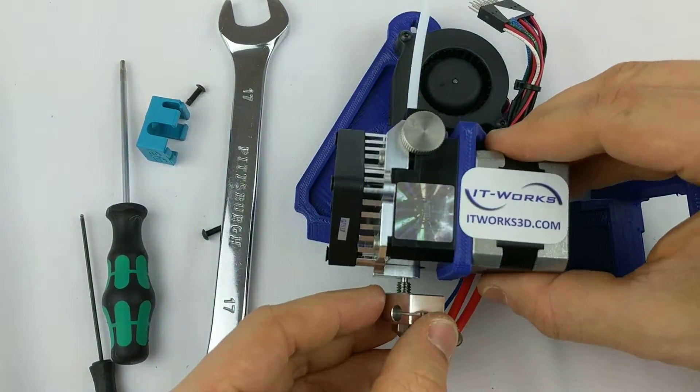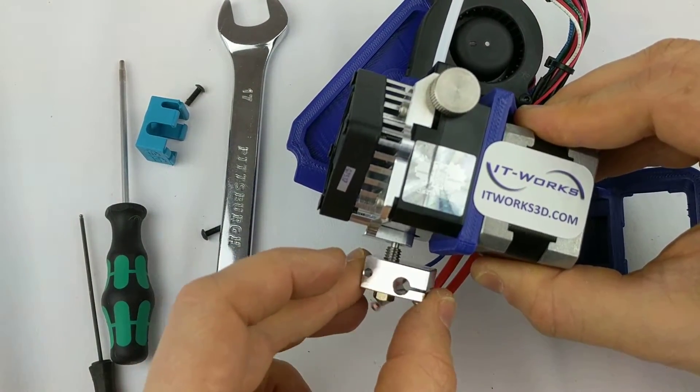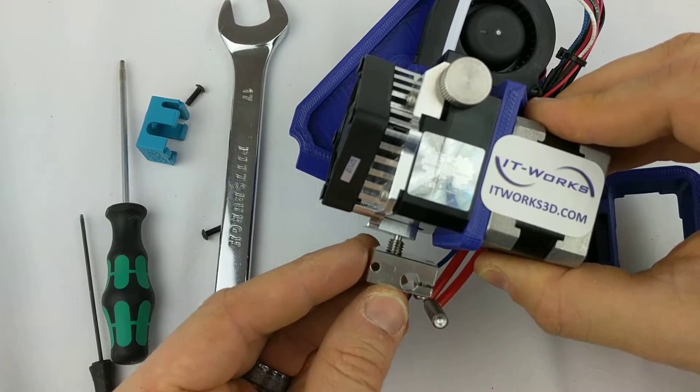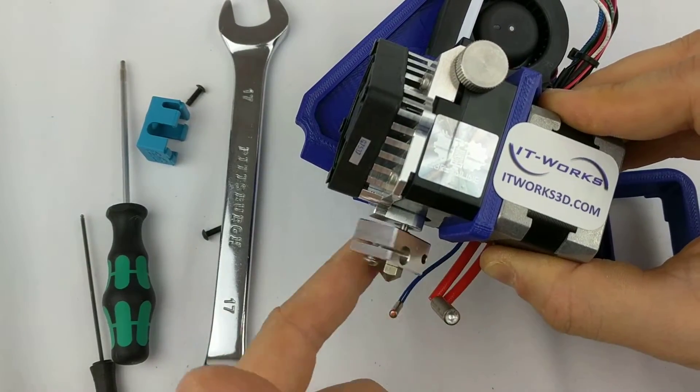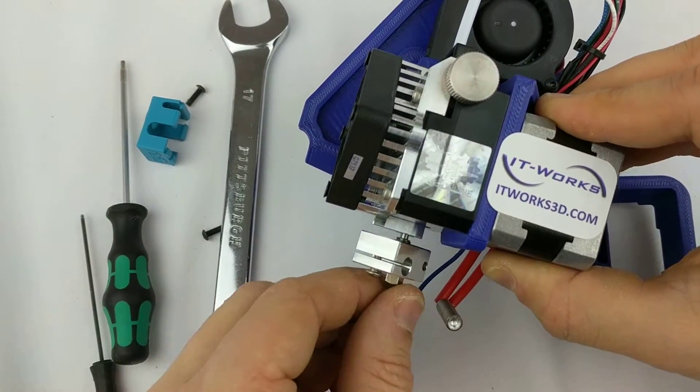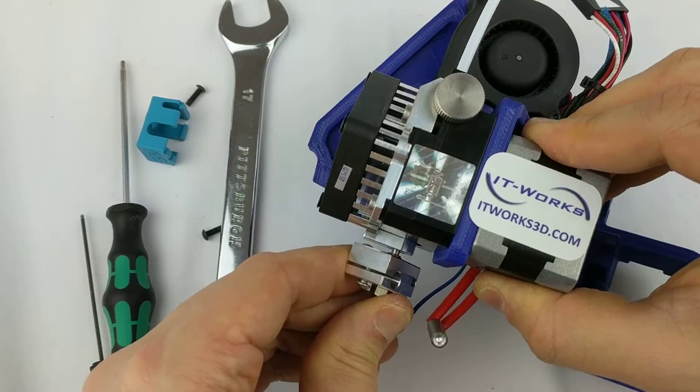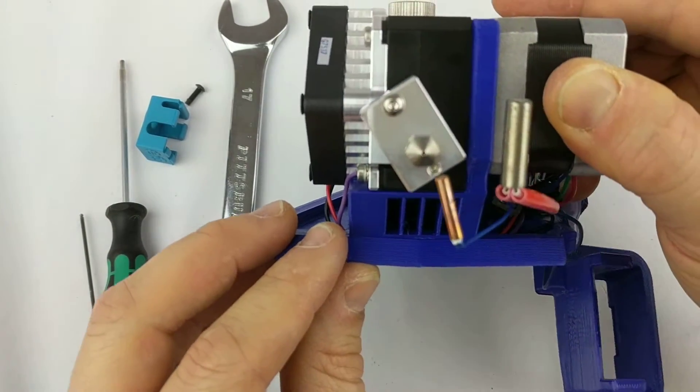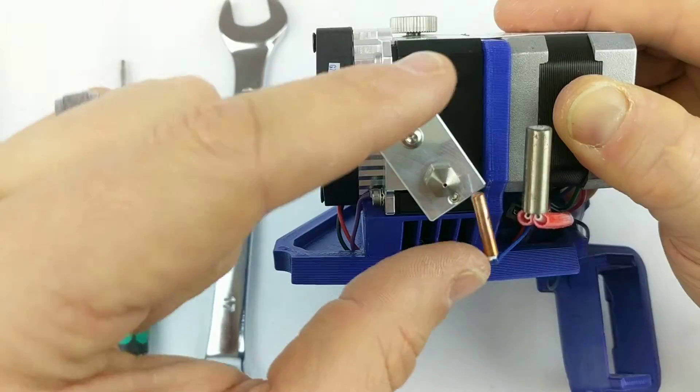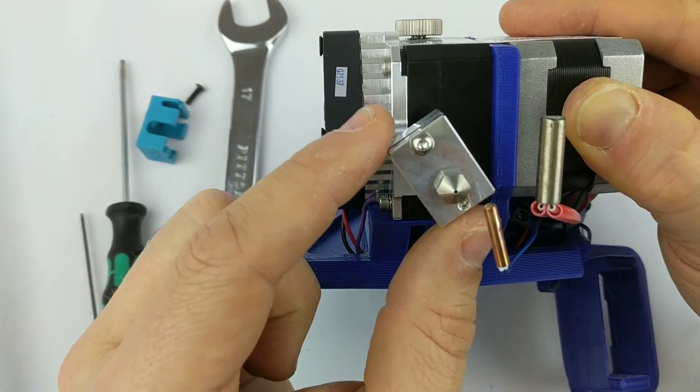And I will then place the block on the heat break, being careful not to cross thread it, and tighten it up on there until it snugs up against the heat break. And this is all just kind of hand tight at this point. Now if you don't need to clock it, in other words orient the block in a different direction, you're done.